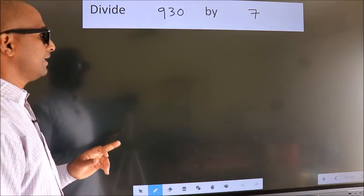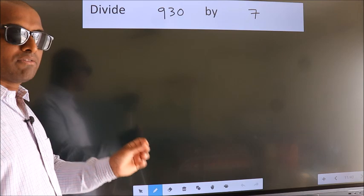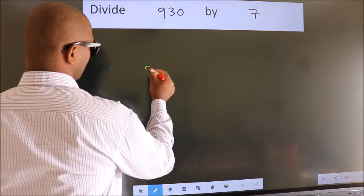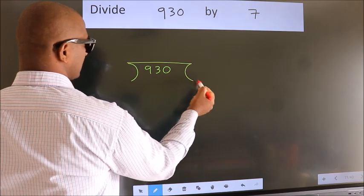Divide 930 by 7. To do this division, we should frame it in this way. 930 here, 7 here.